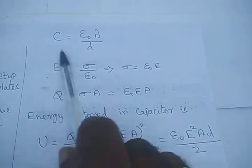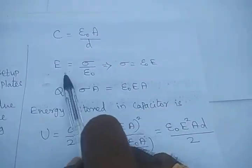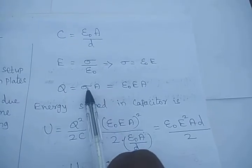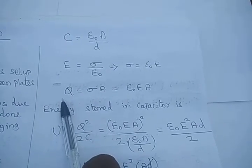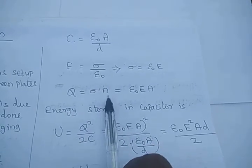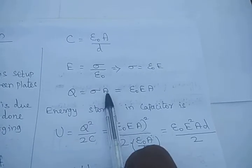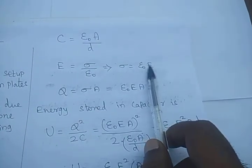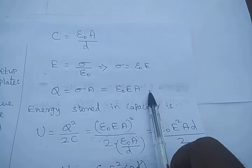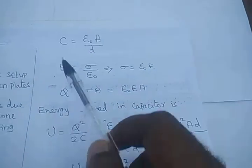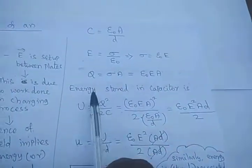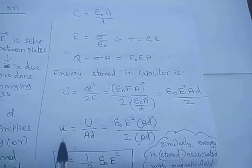This equation was already derived using Gauss's law. The surface charge density formula is σ = q/A, so q = σA. Substituting this sigma, we get q = ε₀EA. Now we know the value of q and the value of C, so we are going to substitute these two equations into the energy stored in a capacitor formula.